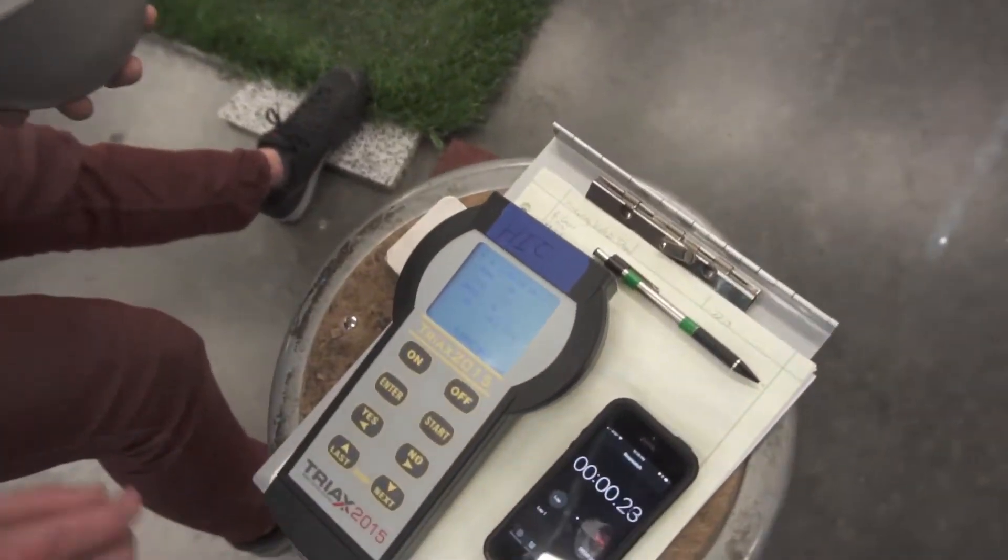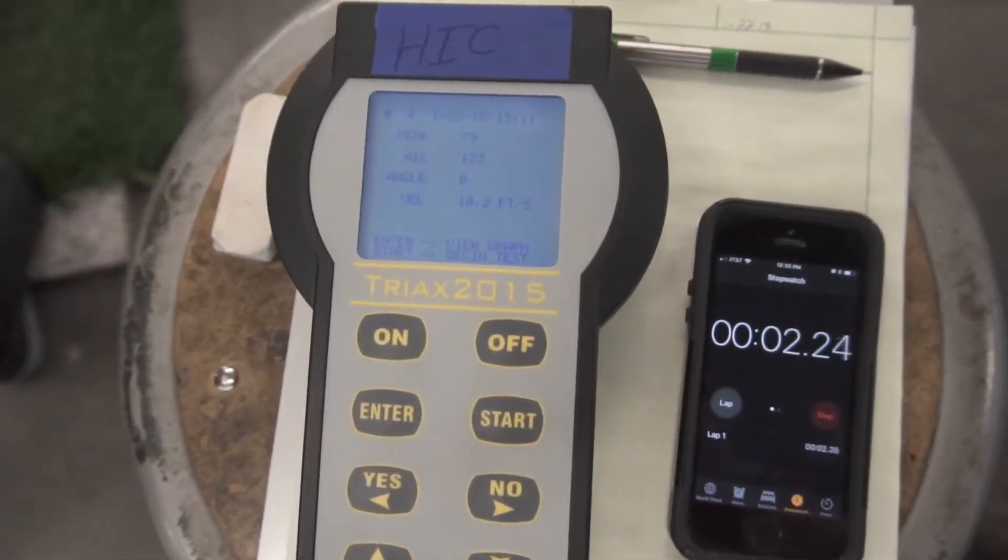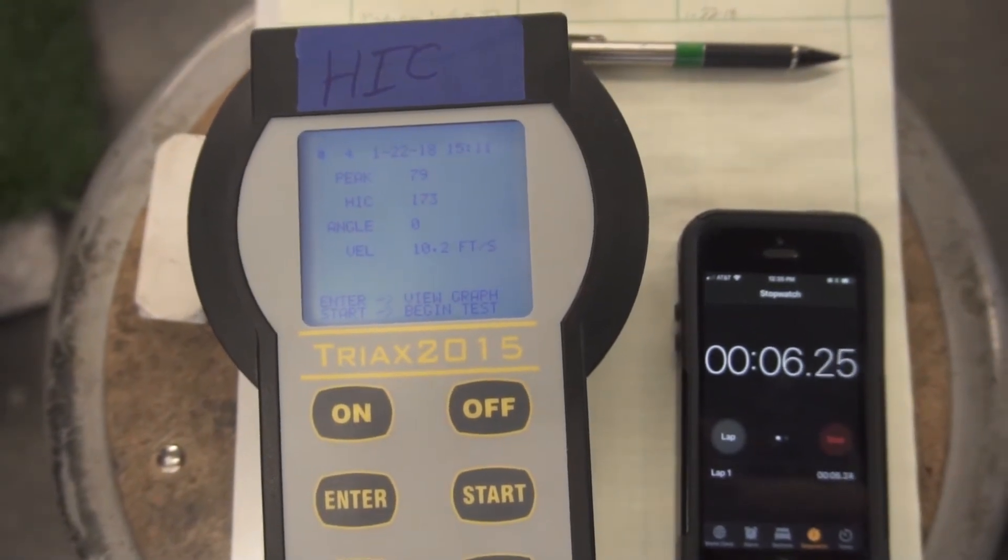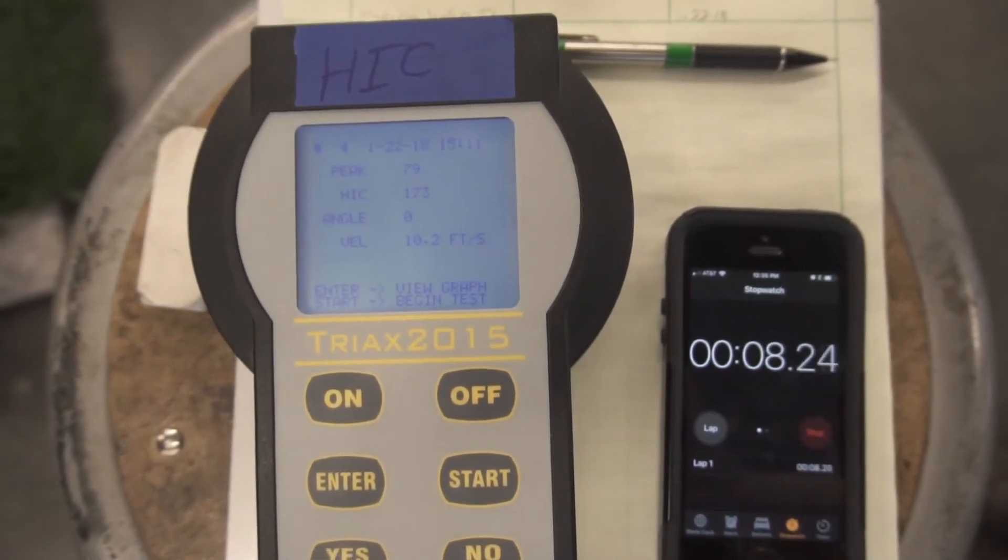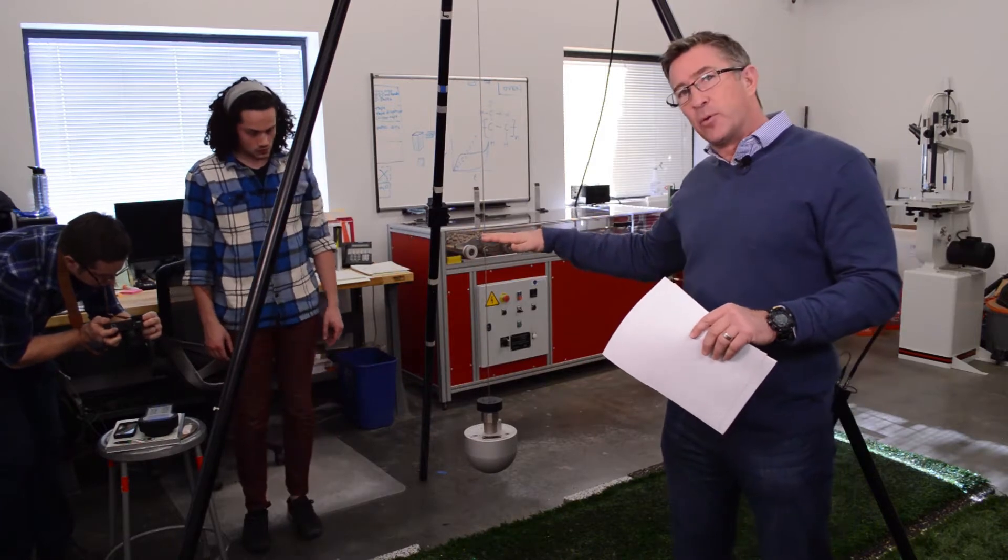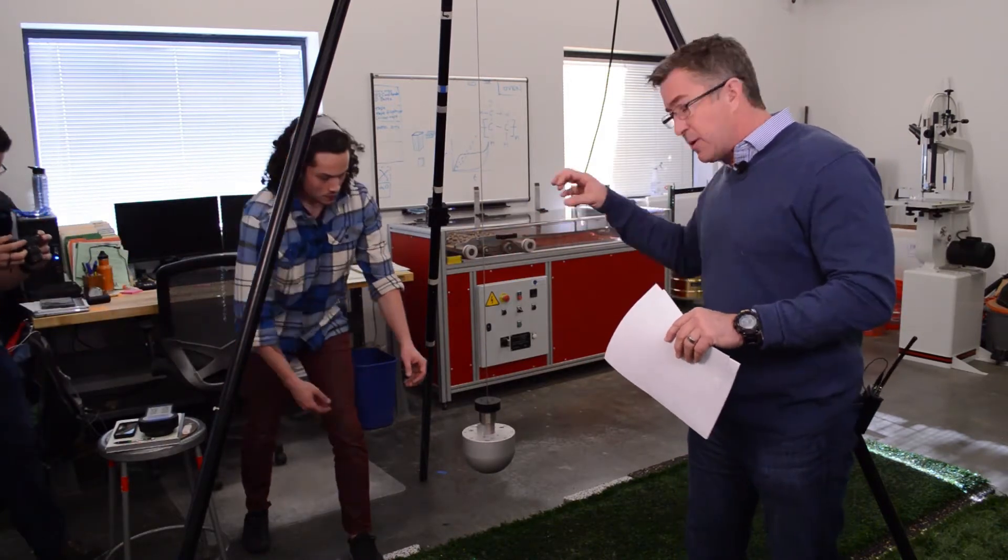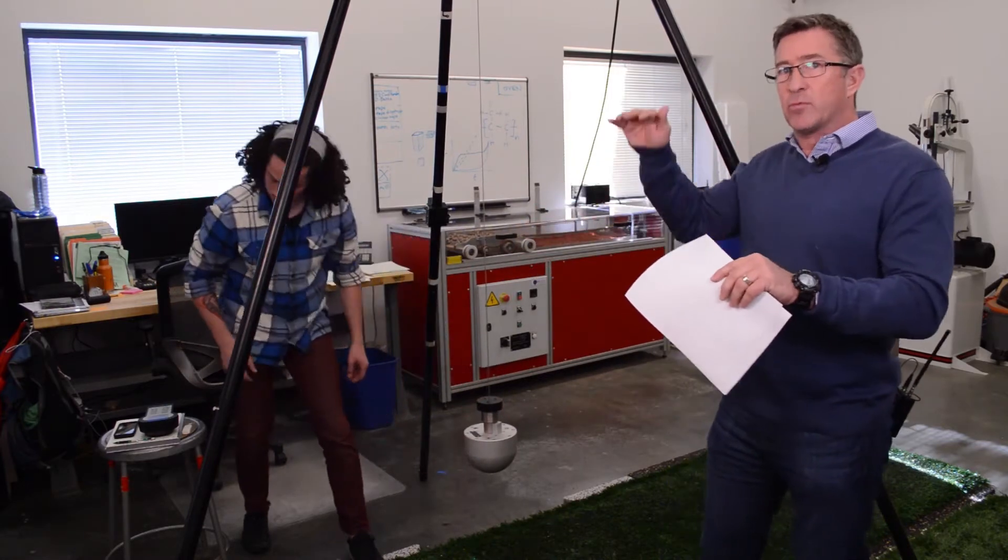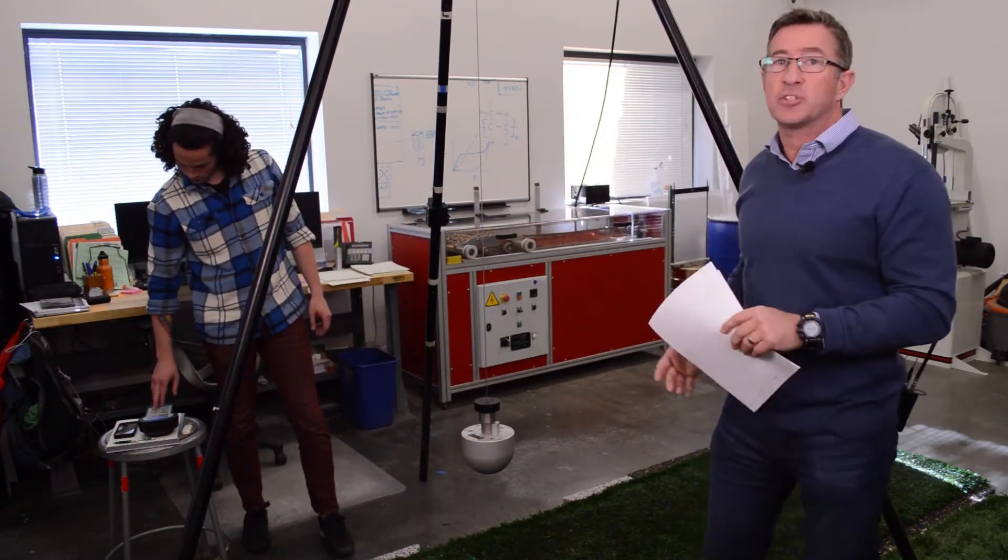So what we do is we drop the device three times in the same location and we average the numbers of drops two and three. Then we raise it to the next height, we shift it a little bit so that we are not constantly pounding on the same exact location. We do another three drops, then we shift it, raise it, do another three drops, and so on.